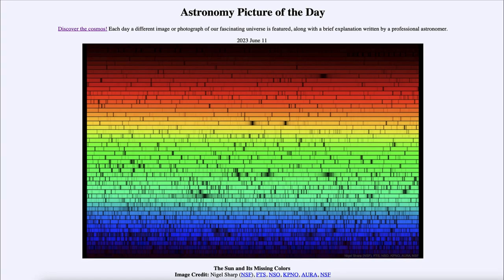Greetings and welcome to the introduction to astronomy. One of the things that I like to do in each of my introductory astronomy classes is to begin the class with the astronomy picture of the day from the NASA website, apod.nasa.gov/apod. Today's picture for June 11th of 2023 is titled The Sun and Its Missing Colors.